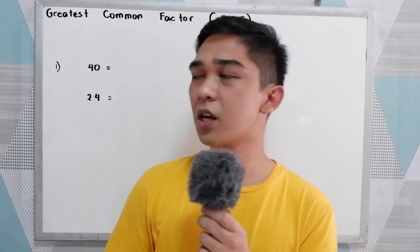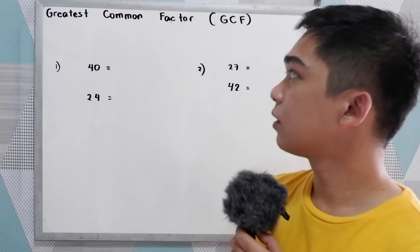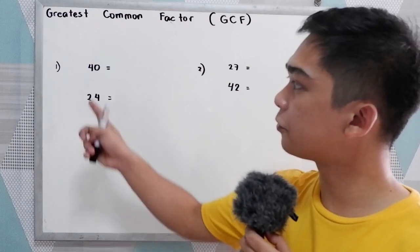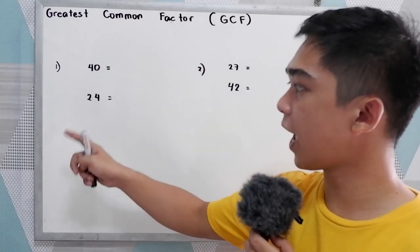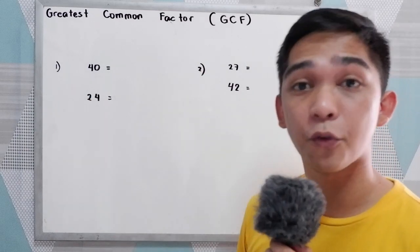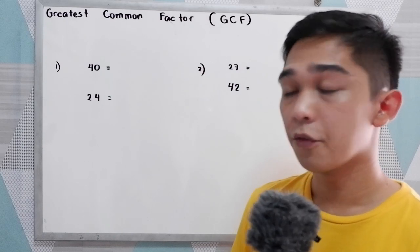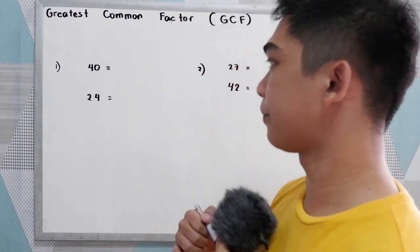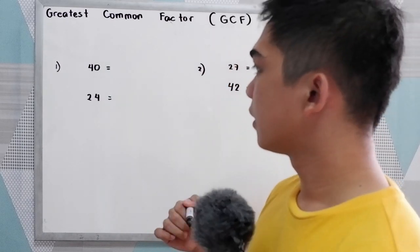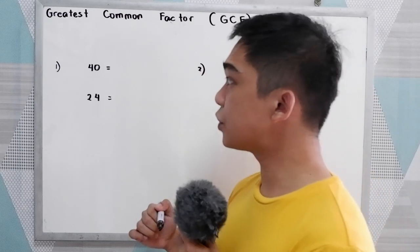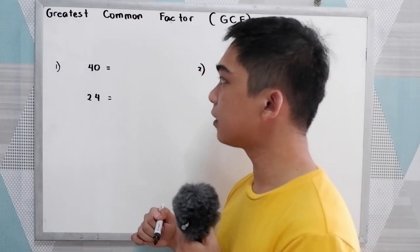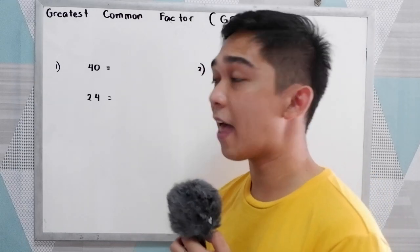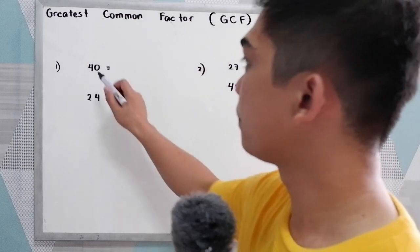Let's say we're going to find the GCF of 40 and 24. So let us use the prime factorization and the decomposition method.